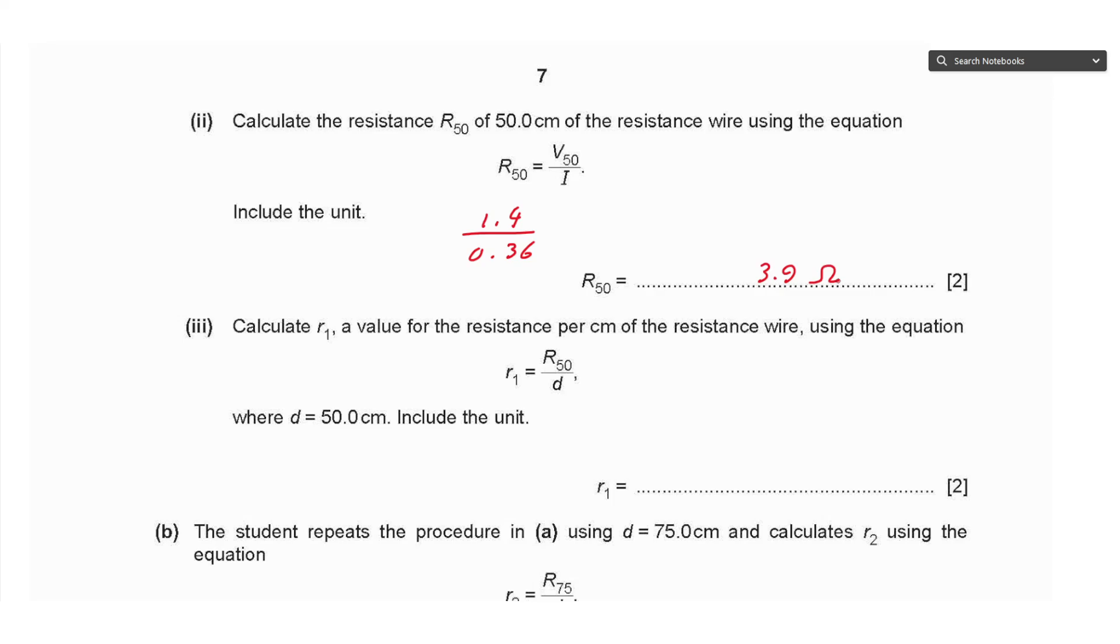Part iii says calculate R₁, a value for the resistance per centimeter of the resistance wire using the equation R₁ equals R₅₀ over d. So we divide 3.9 by 50.0, that gives 0.078. The unit here is the unit of resistance per the unit of length, which is ohms per centimeter.